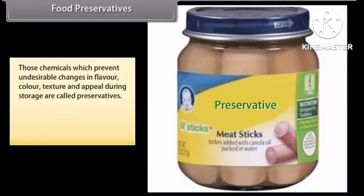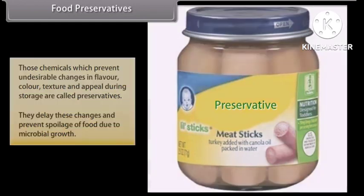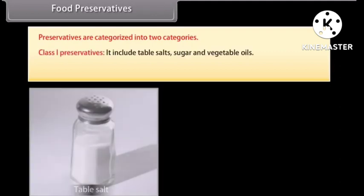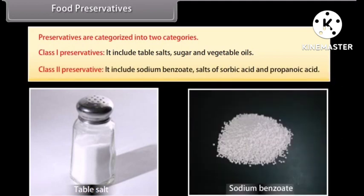Food preservatives: those chemicals which prevent undesirable changes in flavor, color, texture, and appeal during storage are called preservatives. They delay these changes and prevent spoilage of food due to microbial growth. Preservatives are categorized into two categories: Class 1 preservatives, which include common salt, sugar, and vegetable oils; and Class 2 preservatives, which include sodium benzoate, salts of sorbic acid, and propanoic acid.